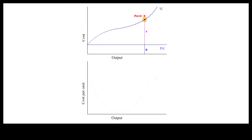For example, at point capital A, TC is equal to small a plus small b, where small a is equal to TVC and small b is equal to TFC.